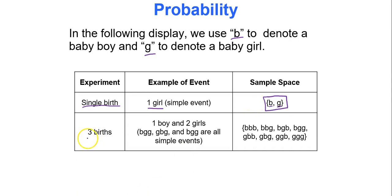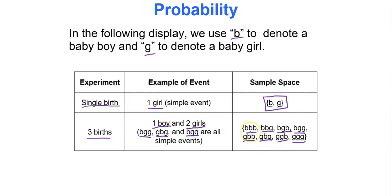For three births, if my experiment is looking at three children being born, one possible event out of many would be having one boy and two girls born. This could be boy-girl-girl, girl-boy-girl, or girl-girl-boy in any of those orders. These are all simple events. The sample space includes all boys, all girls, two boys and a girl in various orders, and one boy and two girls in various orders. The more things involved in your experiment, the more complicated the sample space and events will be.